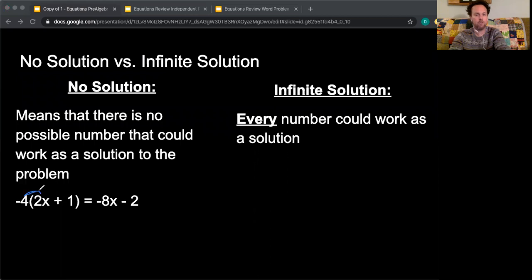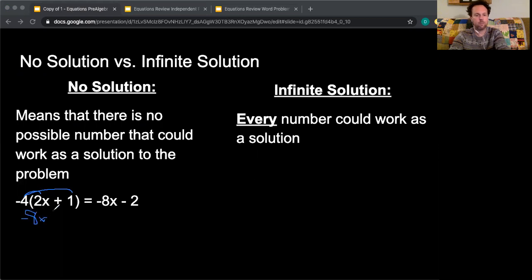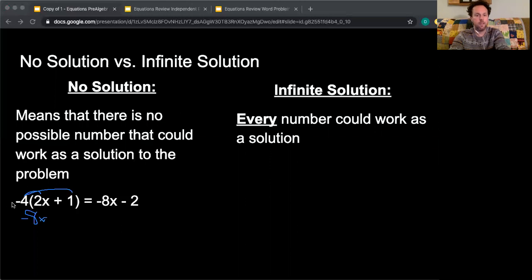So my first step always is distribute if necessary. So I can do that. So I'm going to multiply -4 times 2x, which gives me -8x. And then -4 times a positive 1, negative times a positive gives me -4 equals, and then I bring down my -8x minus 2.